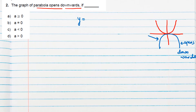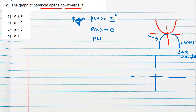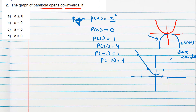Suppose p(x) = x², the simplest quadratic polynomial. If we draw its graph, we put in x values: x = 0 gives p(0) = 0; x = 1 gives 1; x = 2 gives 4. For negative values: x = -1 gives 1, x = -2 gives 4. So for 1 it is 1, for 2 it is 4, for -1 it is 1, for -2 it is 4. Joining these points gives a parabola which opens upward.